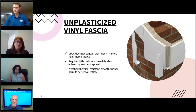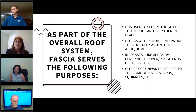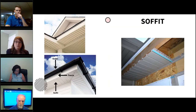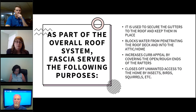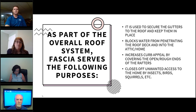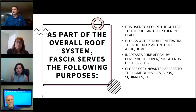Overall, the fascia serves four things: it secures the gutters to the roof and keeps them in place, providing support to the gutters. It also blocks water from penetrating the roof deck and attic space. It increases curb appeal by covering the open, rough ends of the rafters. And finally, it closes off any unwanted access to insects, birds, crows, and any type of animals. Nobody wants those things accessing the attic or making it their home or nest. So it's a very important part of the house — it plays a very important role to protect and maintain the building structure and to prevent other elements from nature from getting inside our buildings.